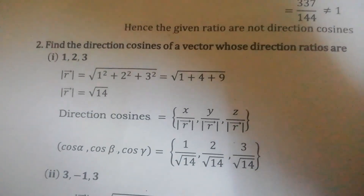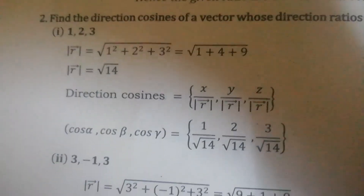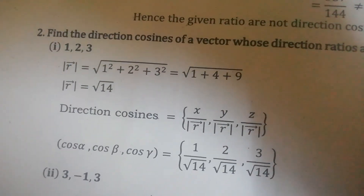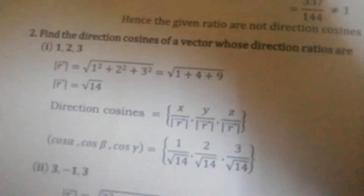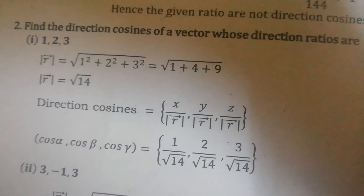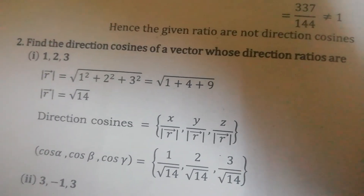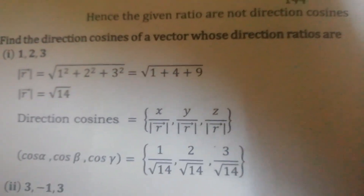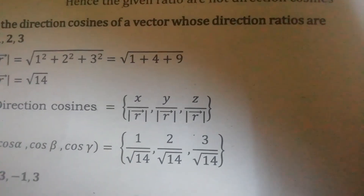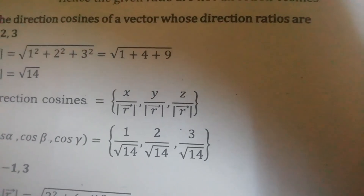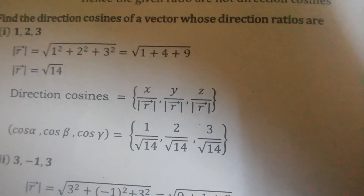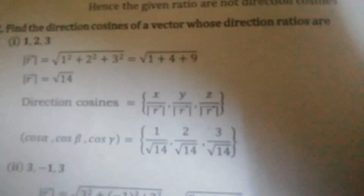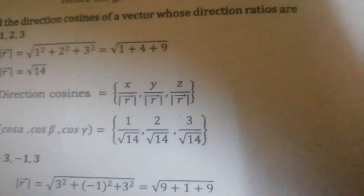The next problem: given the direction ratio, find the direction cosine. The first problem — what is the direction ratio? 1, 2, 3. First find the modulus: root of x squared plus y squared plus z squared, so root of 1 squared plus 2 squared plus 3 squared equals root of 1 plus 4 plus 9 equals root 14. So the direction cosines are x by modulus, y by modulus, z by modulus — that is 1 by root 14, 2 by root 14, and 3 by root 14.